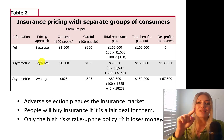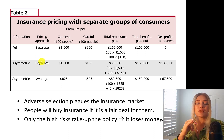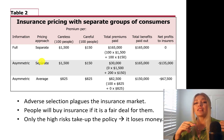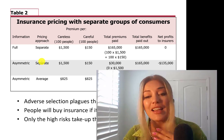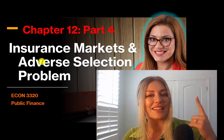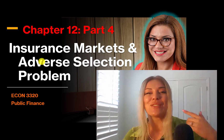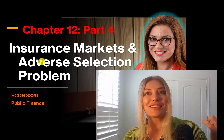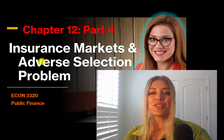This is the reason why government interferes in the insurance markets. For car insurance, government requires everybody in Texas to have liability car insurance so that there are no negative externalities on those who are fully insured. I will talk about insurance markets and the adverse selection problem a little bit more in the next part. Don't forget to hit like on this video and subscribe to my channel. See you later.